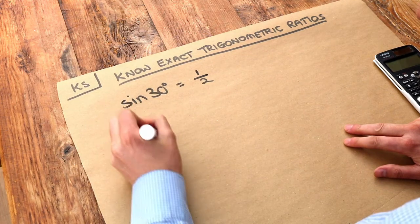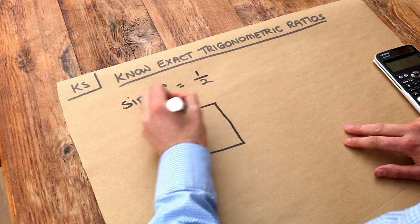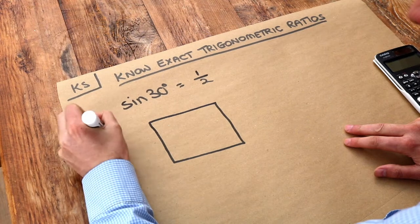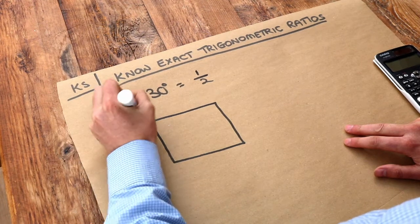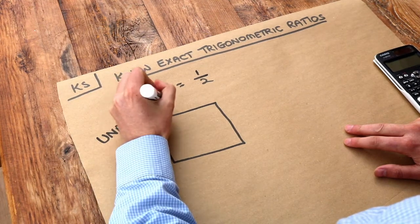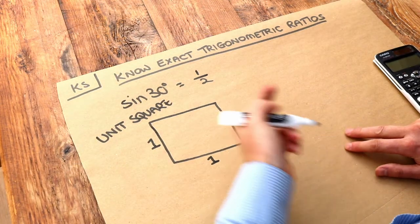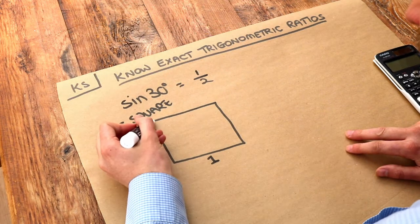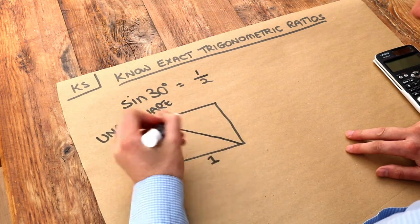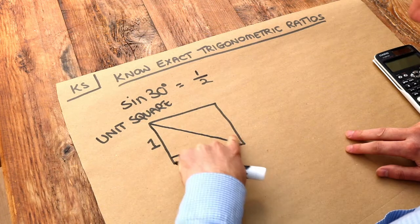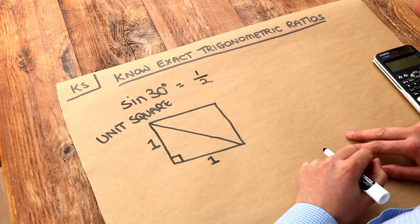Now there's certain ones you're expected to know, and we get them by considering different shapes. This is shape one to consider, where you consider a unit square. By unit I just mean that the lengths are one. Now we want to end up with a triangle, because trigonometry involves triangles, so if you split it diagonally in half like that.